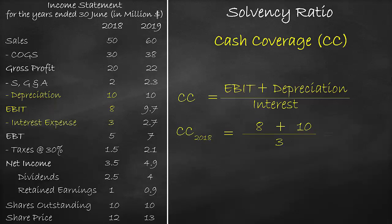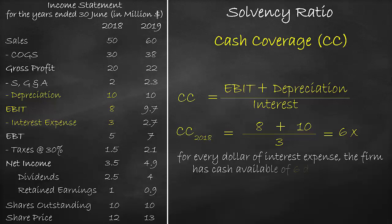The unit of the cash coverage ratio is times. This means that for every dollar of interest expense, the firm has a capital of $6 to pay that interest expense. It is healthy to be greater than one, and a higher ratio means that the firm has low debt financing.